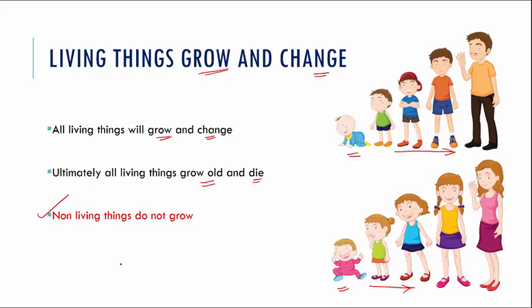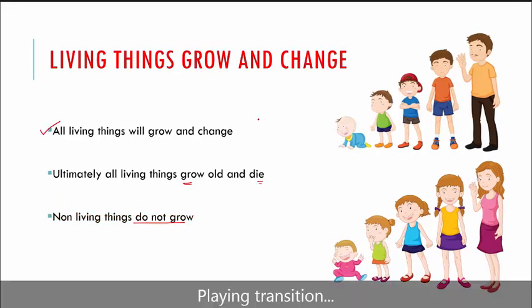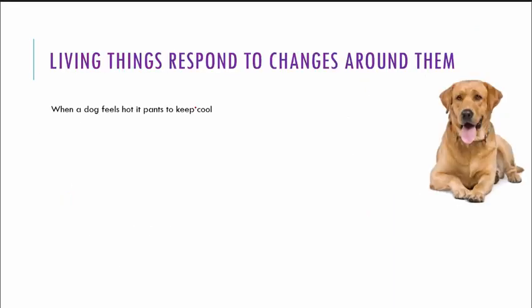Now let us see how living things will respond to the changes around them. If you see a dog, when a dog is feeling hot, it will pant to cool itself off. What is panting? When it puts its tongue out and breathes very heavily, that is called panting. So if you see a dog panting, it is probably because the dog is feeling very hot and it wants to cool down.